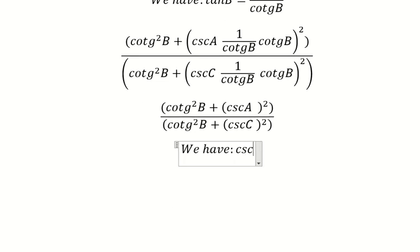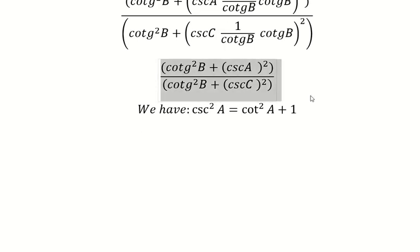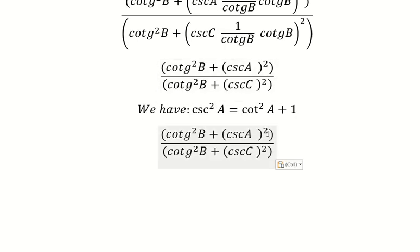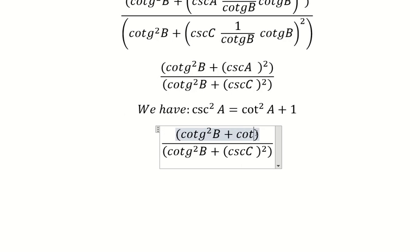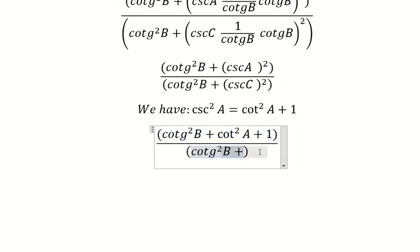Cosecant A squared is equal to cotangent A squared plus one. So we need to transform this one into this one. Similar for the second one.